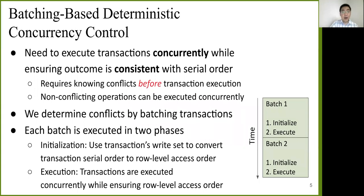Here, let me show you how a basic deterministic concurrency control works. So we need to execute transactions concurrently while ensuring the outcome is still consistent with the serial order. Now this requires knowing the conflicts before transaction execution so that we can execute these non-conflicting operations concurrently. We do this by batching transactions. So transactions are executed batch by batch. Inside each batch, there are two phases, initialization and execution.